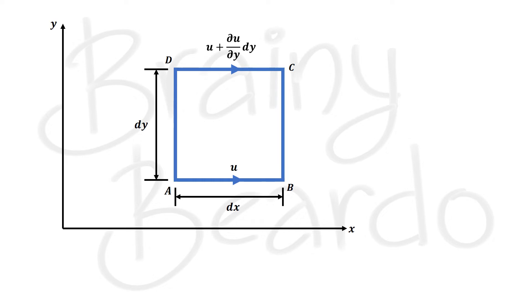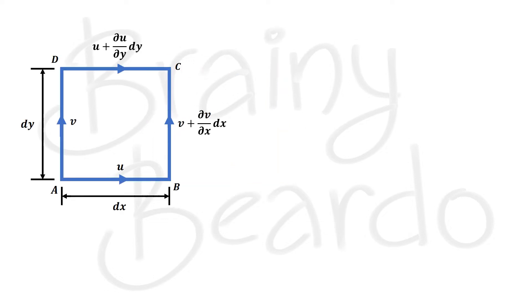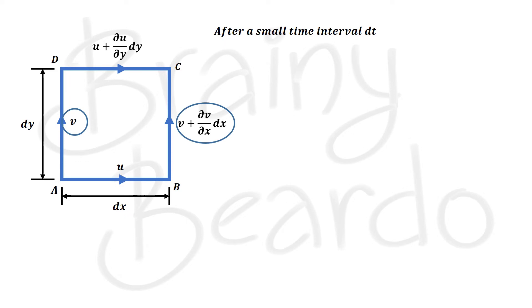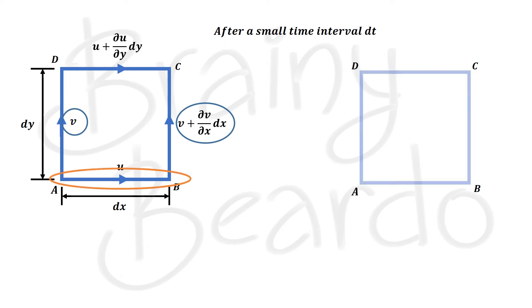Similarly, the velocity of fluid along AD, which is parallel to the y-axis, is assumed to be v. Therefore, along BC the velocity should be increased due to the gradient and it should be v + (∂v/∂x)·dx. Now after a very small interval of time dt, because of the difference between these two velocity components, there will be rotation on side AB, and point B moves to a new position B′.